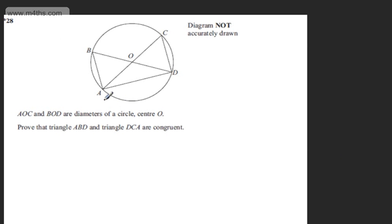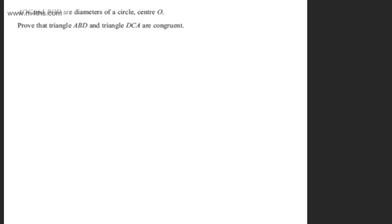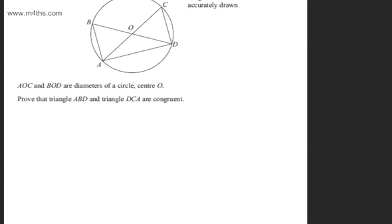This is question number 28, an asterisk question. We're told AOC and BOD are diameters of a circle, centre O. We're asked to prove that triangle ABD and triangle DCA are congruent. The question carries three marks.